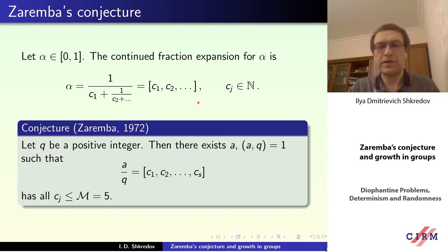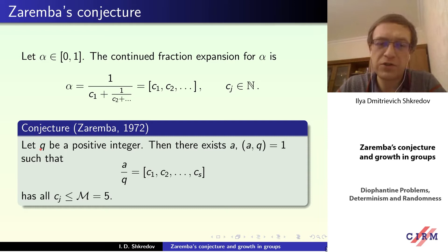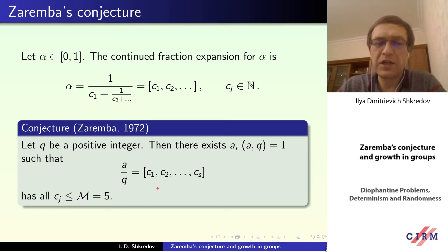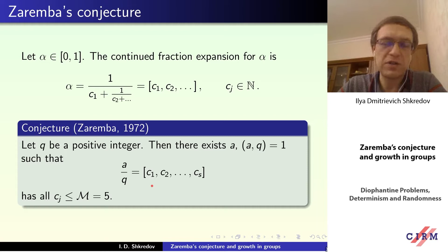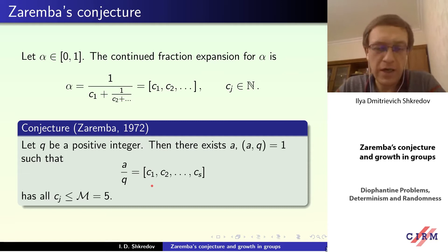Now let's fix a positive integer q, and we want to find the numerator a, so that a is coprime to q, and if we consider the continued fraction expansion of the ratio a over q, then all partial quotients are bounded by some constant. Zaremba conjectured that this constant equals five. This five is because of numerical experiments — for small q, you see that the partial quotients can equal four.